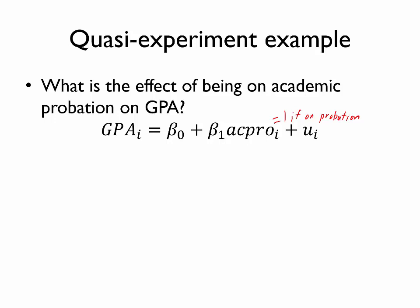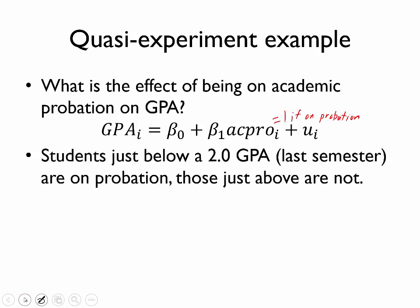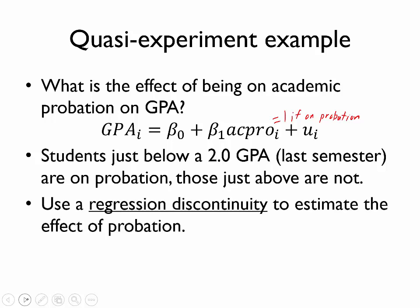For our third quasi-experimental technique, let's consider a fact that many academic probation programs are based on students being below some threshold GPA in the previous semester. For example, suppose that students who were just below a 2.0 GPA last semester are now on probation, and those just above are not. Intuitively, you may think of that very sharp cutoff as giving us something like a randomized experiment where we could potentially compare those students who were just barely on probation versus those who were just barely not on probation. This is the idea behind the regression discontinuity technique, and this can help us to estimate the causal impact of probation.